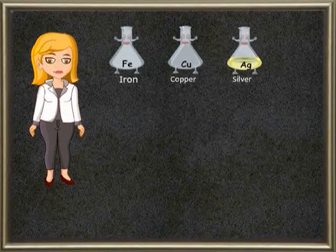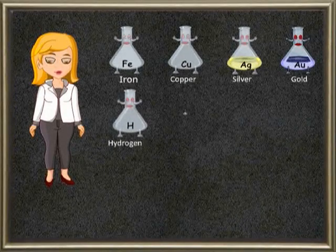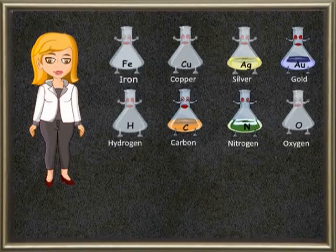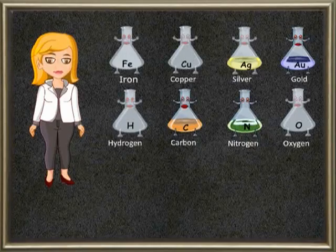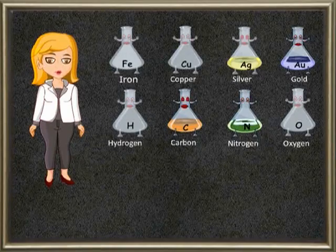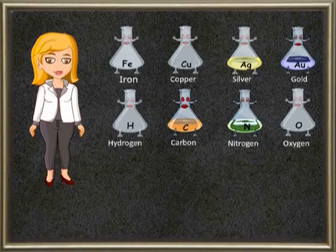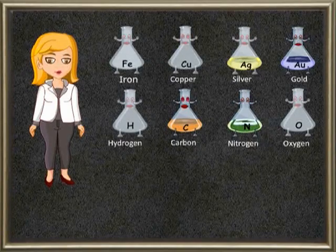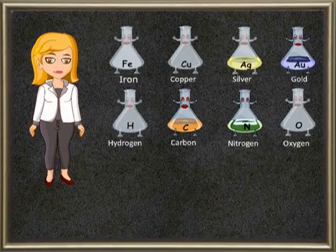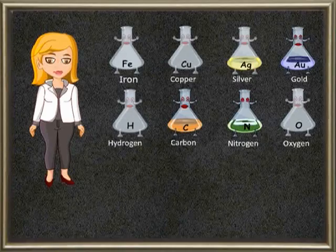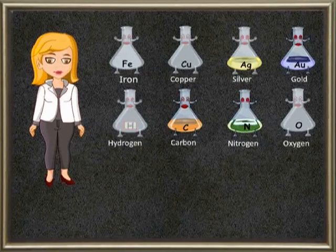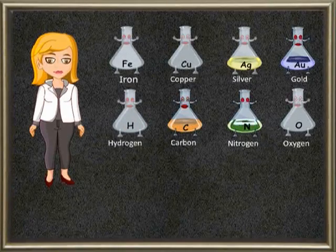Iron, copper, silver, gold, hydrogen, carbon, nitrogen and oxygen — all these are common examples of elements. If you observe carefully, we find that there are some symbols on these bottles like Fe, Cu, Ag, Au, H, C, N and O. Do you know what these symbols stand for?